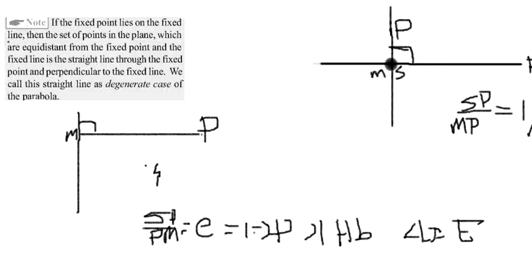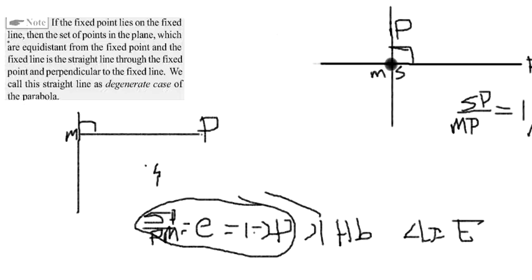Here SP by PM is always constant, and since the ratio is 1 it should be a parabola. A parabola has eccentricity ratio equal to 1, and would normally take the form y² = 4ax or x² = 4ay. But in this case it turns out to be a straight line. So this is a degenerate case of a parabola — a straight line perpendicular to the fixed line, passing through the fixed point which lies on the fixed line. Thank you friends.